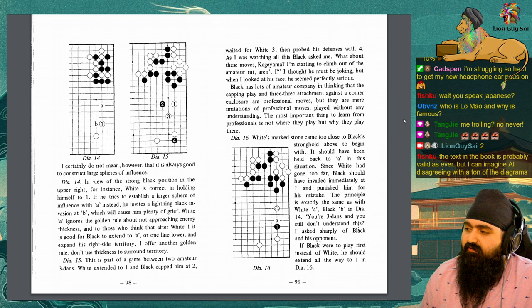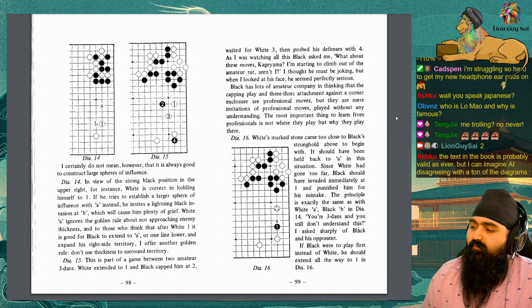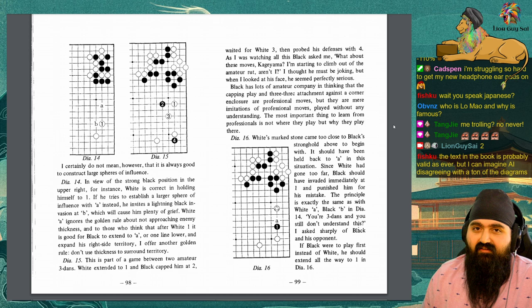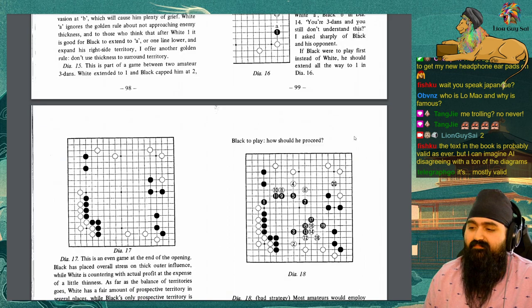Diagram 16. White's marked stone came too close to black stronghold above, to begin with. It should have been held back to A in this situation. Since white had gone too far, black should have invaded immediately at 1 and punished him for his mistake. The principle is exactly the same with white A, black B in diagram 14. You're 3-dans and don't understand any of this? I asked sharply of black and his opponent. If black were to play first instead of white, he should extend all the way to 1 in diagram 16.